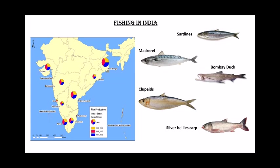From fresh water — meaning rivers, lakes, and ponds — fishing is carried out in rivers, canals, tanks, and reservoirs. The fishes found and caught here include silver bellies and carp, also called chopra, which are the major freshwater varieties.